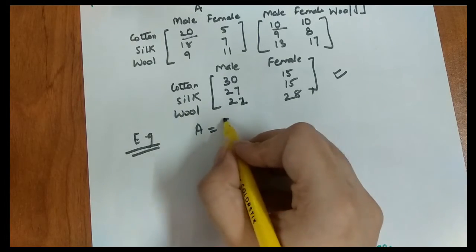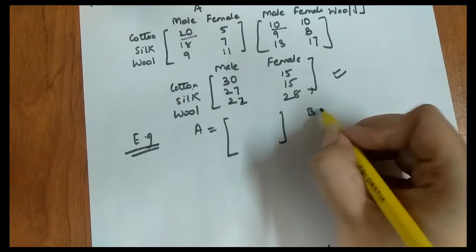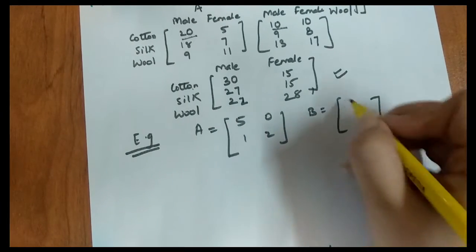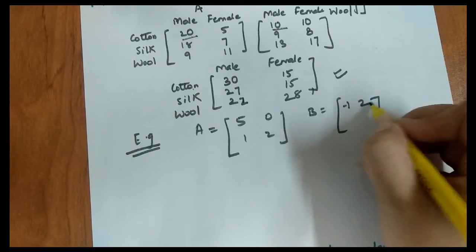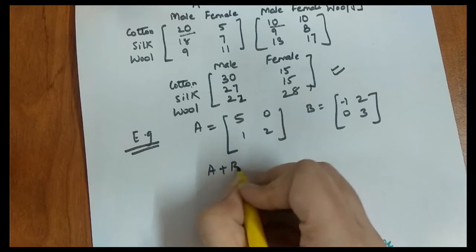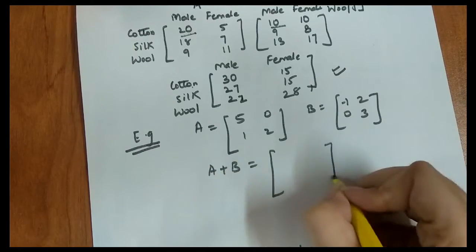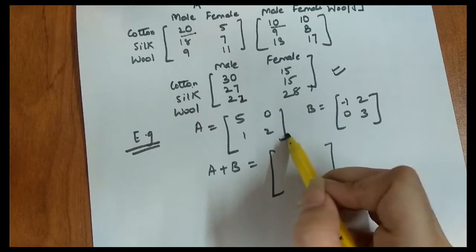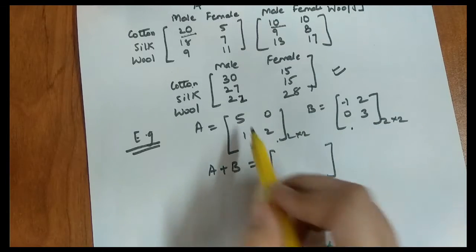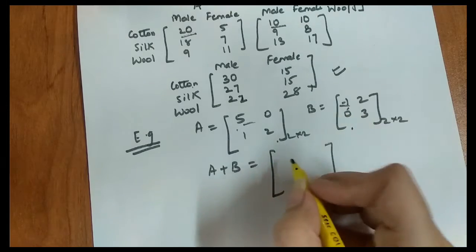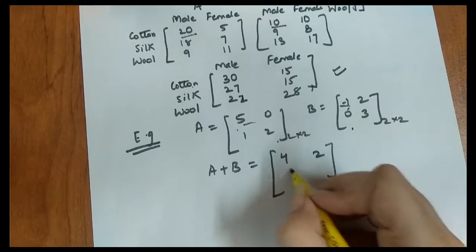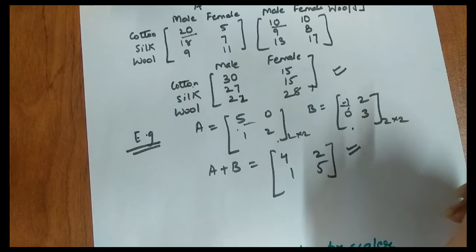Let's take a small numerical example. Assume we have matrix A and matrix B, both of order 2×2 — the same order. We have to find matrix A plus B. We simply add corresponding elements: 5 plus (−1) = 4, then 2, then 1, then 5. That gives us matrix A plus B.